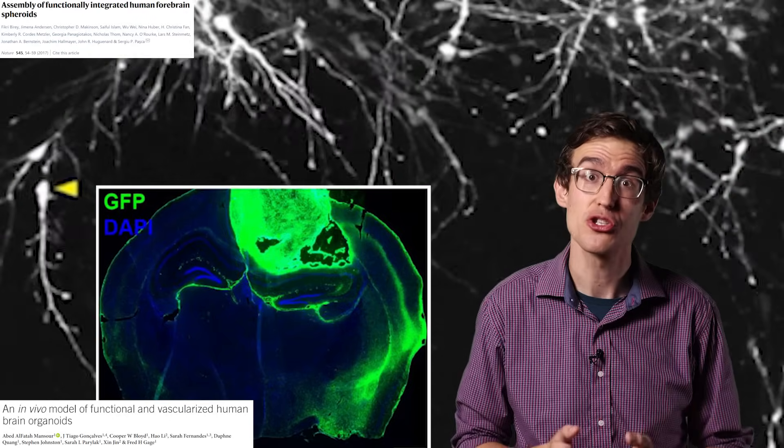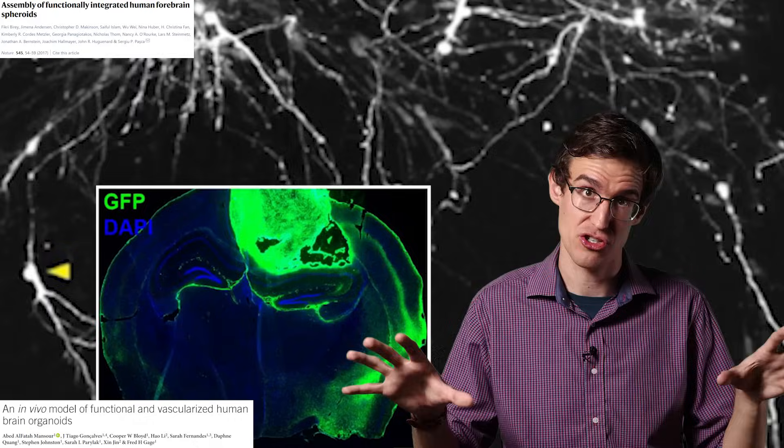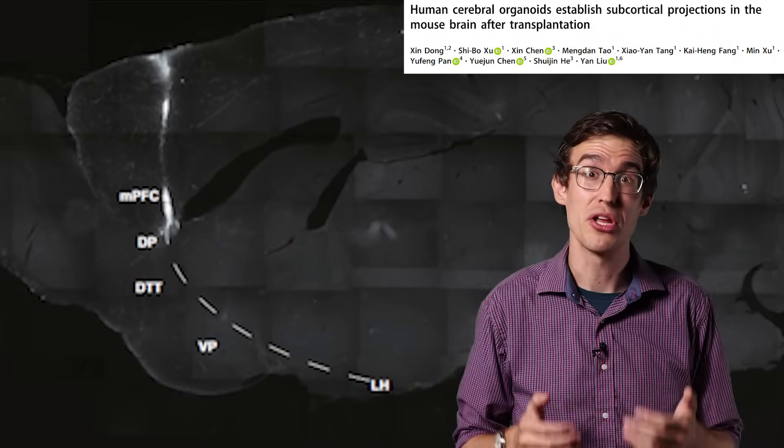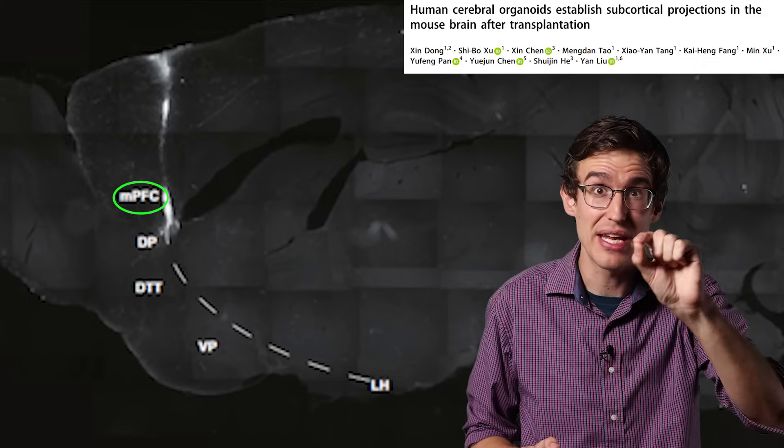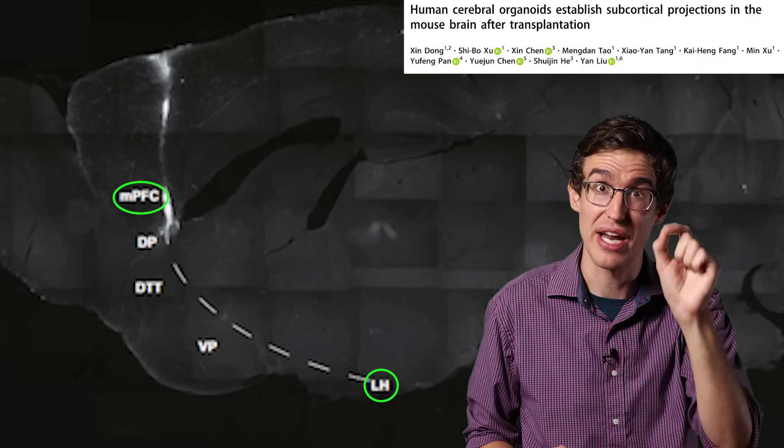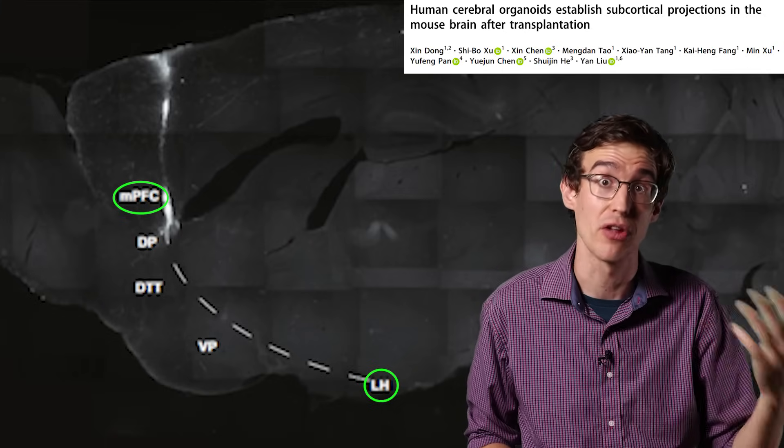This is why neurons are such good learning machines. They're constantly branching out and looking for new connections. In this other study, they put human organoids in the mouse prefrontal cortex, and it sent projections all the way down to the hypothalamus, which connects the brain with glands that secrete hormones for things like the fight or flight response.